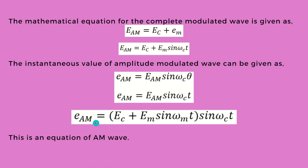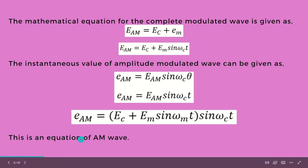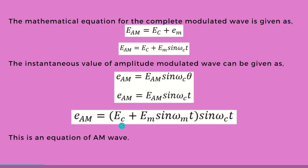Substituting into the equation: eAM = (EC + EM sin(ωM t)) · sin(ωC t). Taking sin(ωC t) as common, our final AM wave equation is given as eAM = (EC + EM sin(ωM t)) · sin(ωC t).